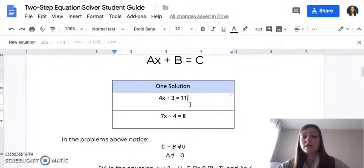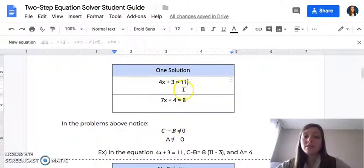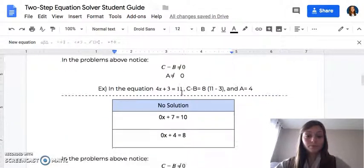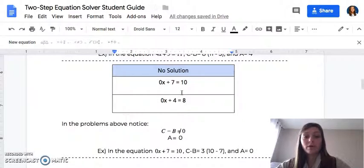And some observations that you can make together as a class is that when we take C and we subtract B in both of these equations, it does not equal zero. And A, our A value, is not equal to zero. And these patterns result in an equation with one solution. A no solution equation results in a pattern of C minus B not being zero, and our A value is zero. So we're taking a number that is not zero, and we're dividing it by zero. And we cannot divide by zero, which results in a no solution.